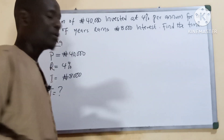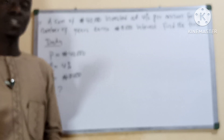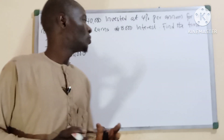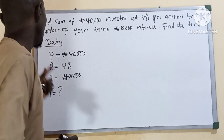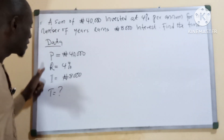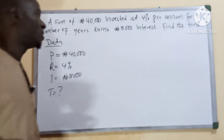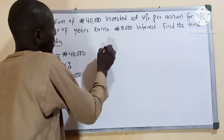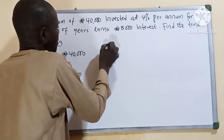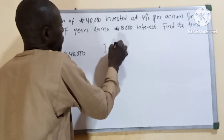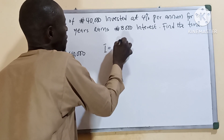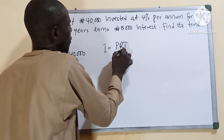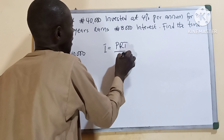So from here, we have the formula: I equals P times R times T, all over 100.